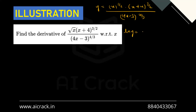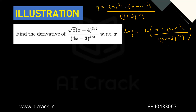ln y = ln[ x^(1/2) · (x+4)^(3/2) / (4x−3)^(4/3) ]. Now we can shift these powers using log properties.